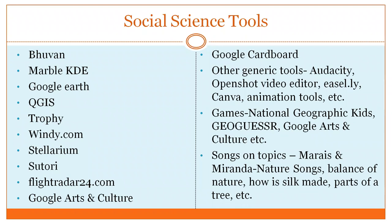Google Cardboard is a VR set — you download the app, place your smartphone into the cardboard headset with a lens, and create a virtual reality effect. It was one of the first cheap VR sets made available to the public. There are also educational games available on National Geographic Kids, GeoGuessr, and Google Arts and Culture — you can play these games or get inspired to create your own educational games on related topics.